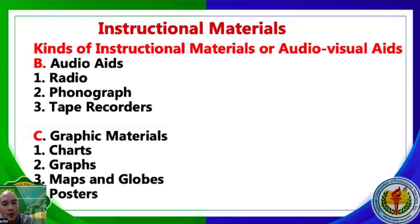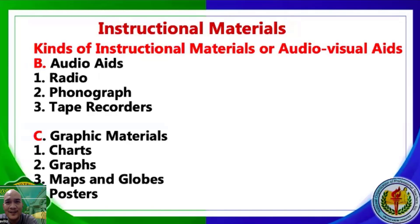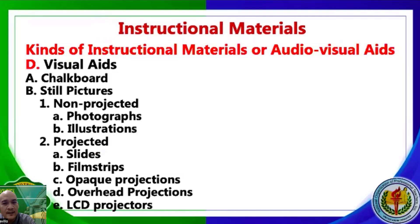The next category is audio materials — radio, phonograph, tape recorders, MP3, Spotify, podcast — anything heard that is used in the classroom. Then graphic materials — charts, graphs, maps, globes, and posters — the graphics we use in teaching. Next is visual aids — chalkboard, pipeboard, smartboard — which can be visual aids. Still pictures include photographs and illustrations.